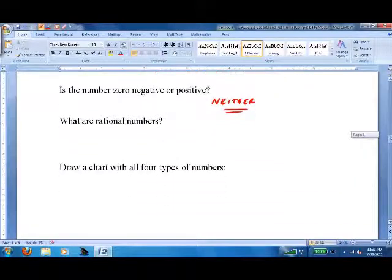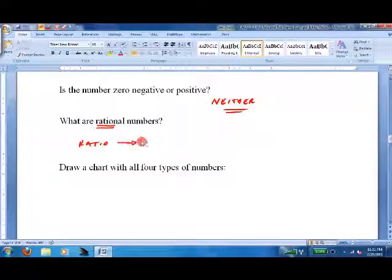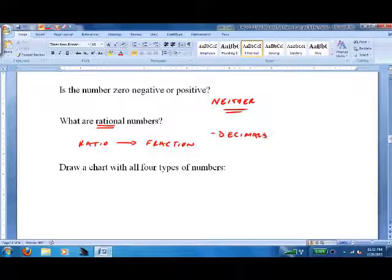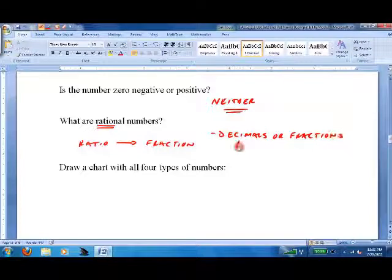So what are rational numbers? Well, again, we look into the word. We have the word ratio, which means fraction. So generally speaking, they are decimals or fractions, where the decimals can be represented as fractions.